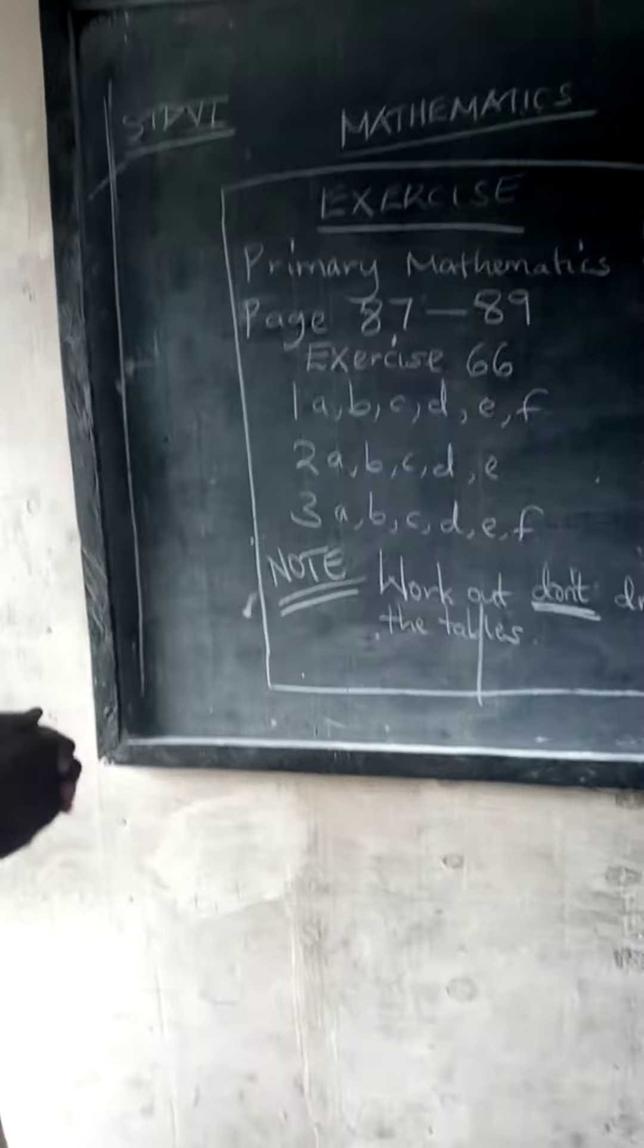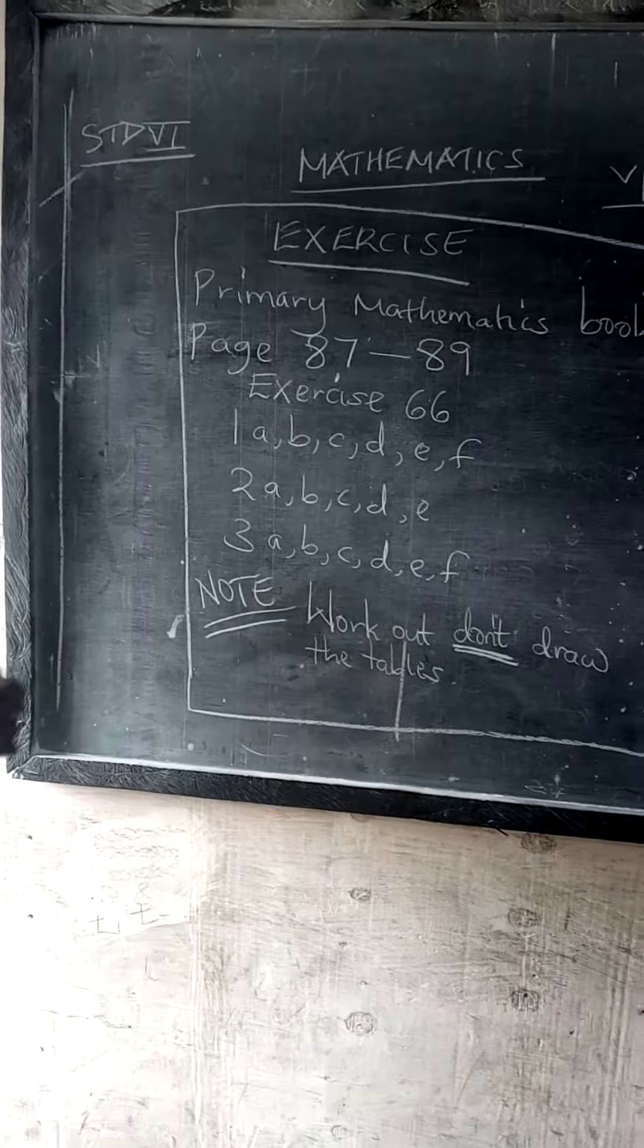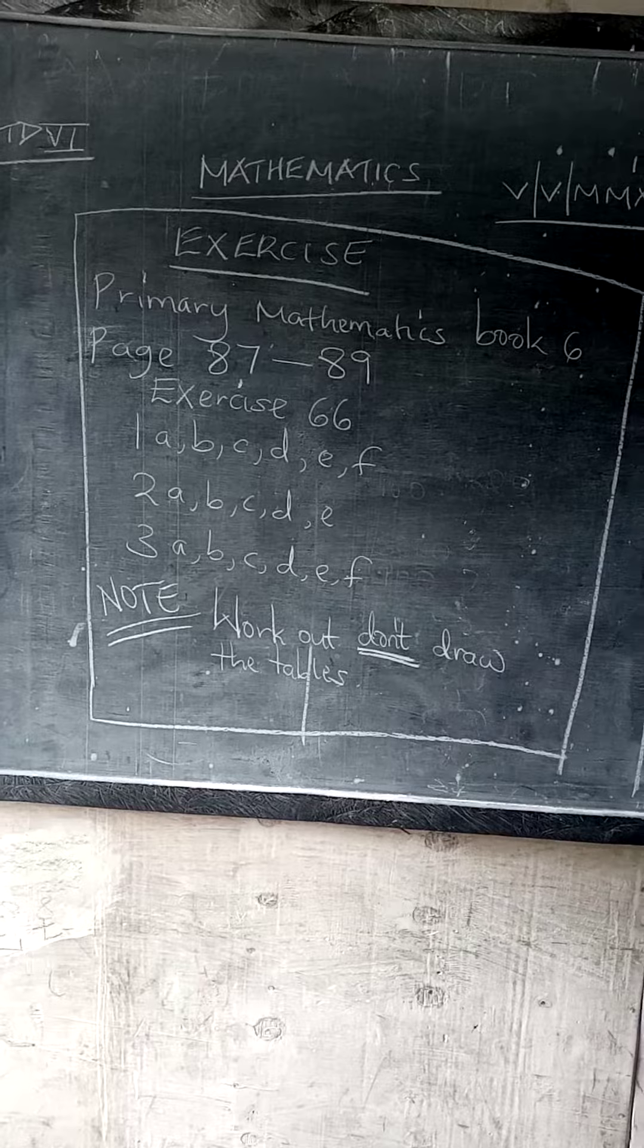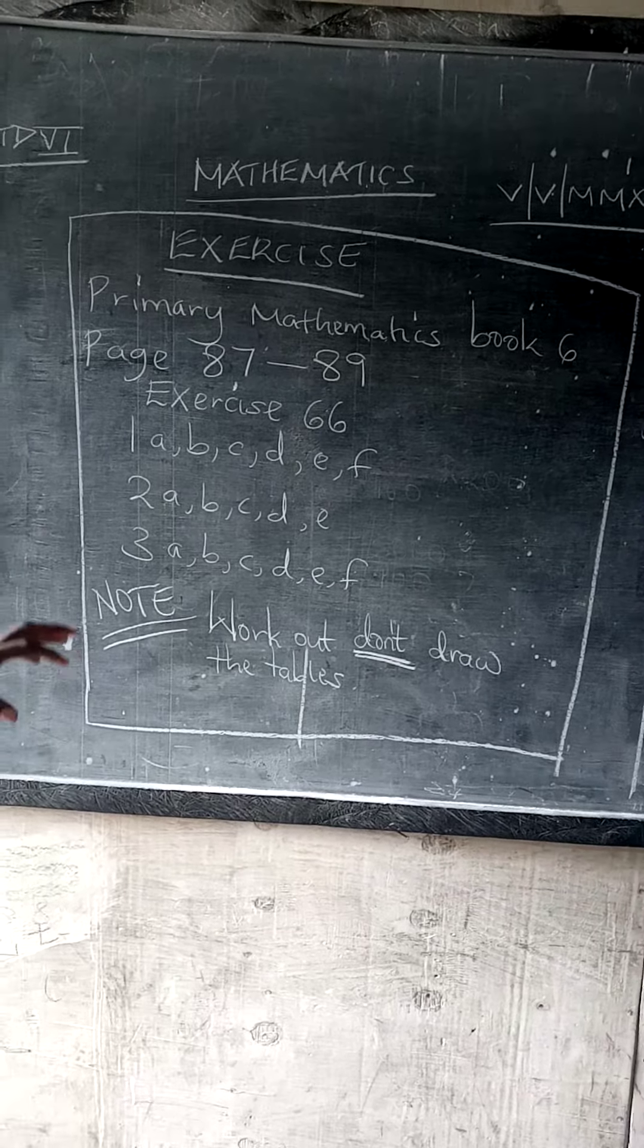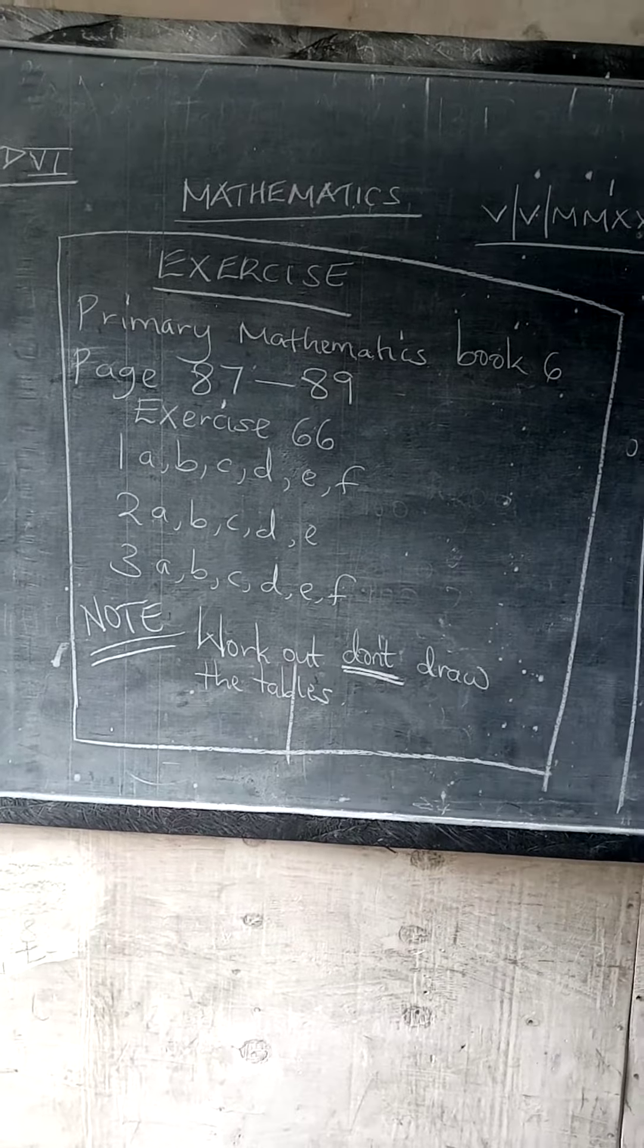Okay, so this is the exercise we are going to follow. The procedure we have been using for working out the percentages of quantities. The exercise is in Primary Mathematics book 6.